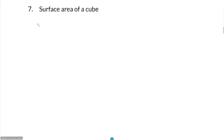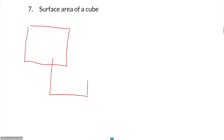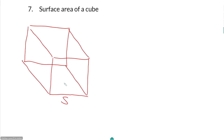Surface area of a cube: for a regular cube made up of squares, think of it as having six panels — front and back, top and bottom, left and right — all the same. If each side has length S, the area of one square face is S squared. Therefore the surface area of the entire cube is 6S squared.